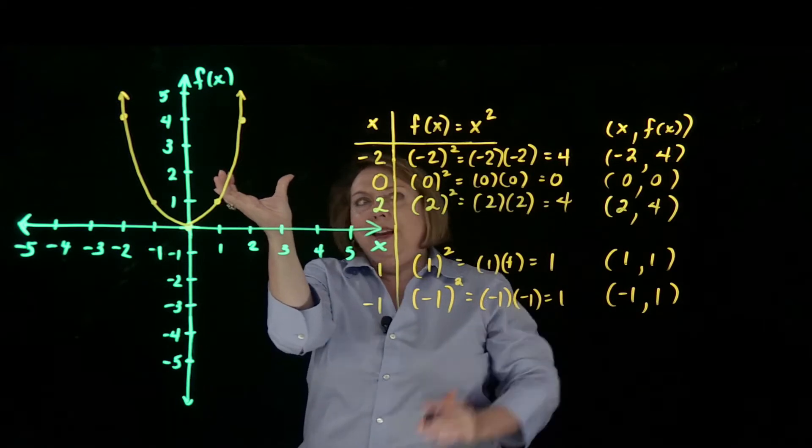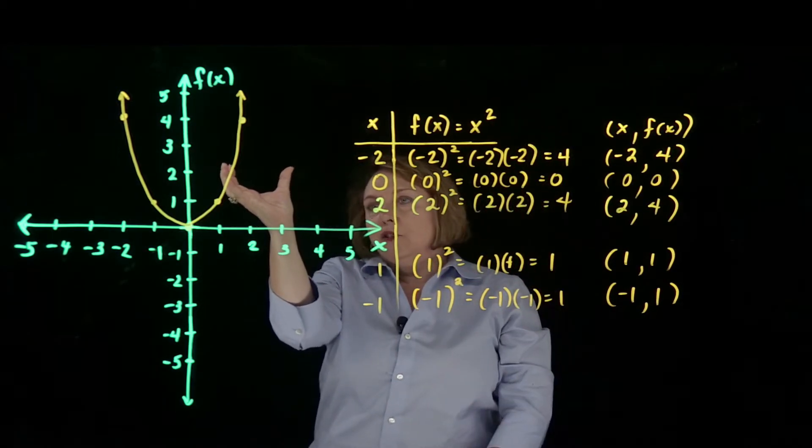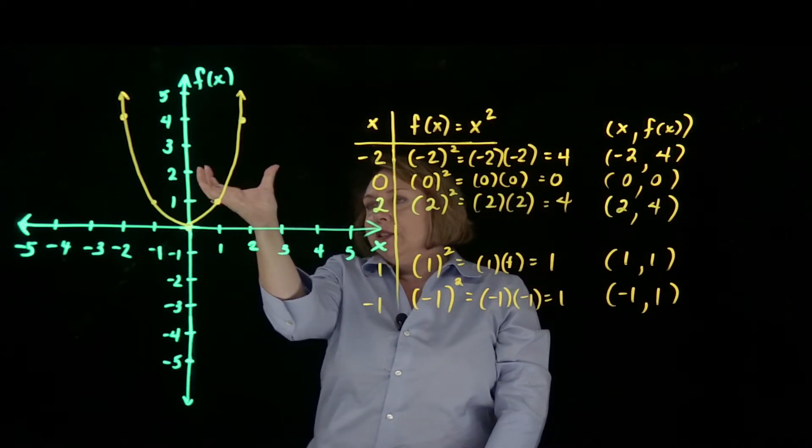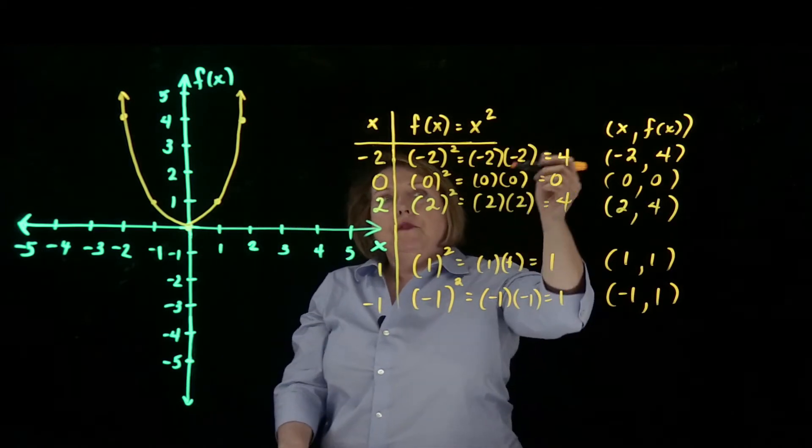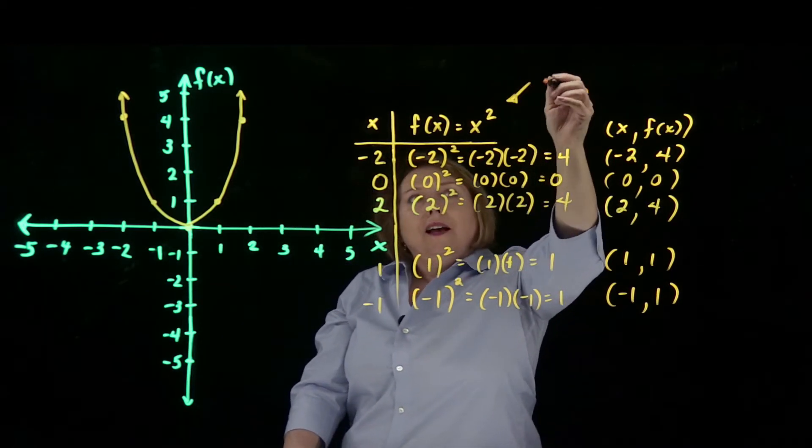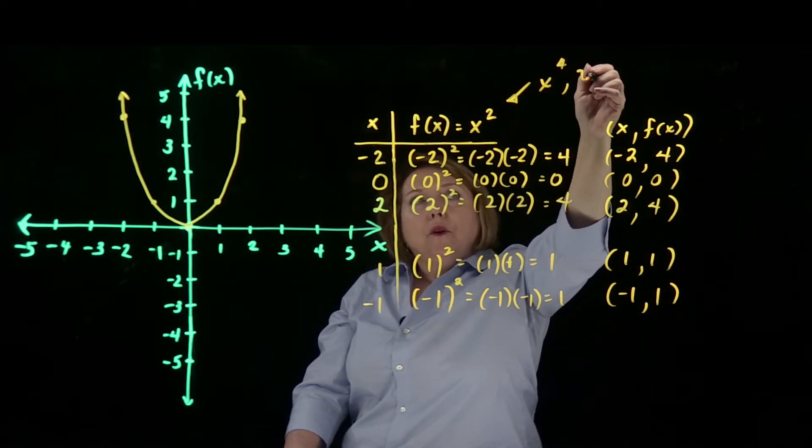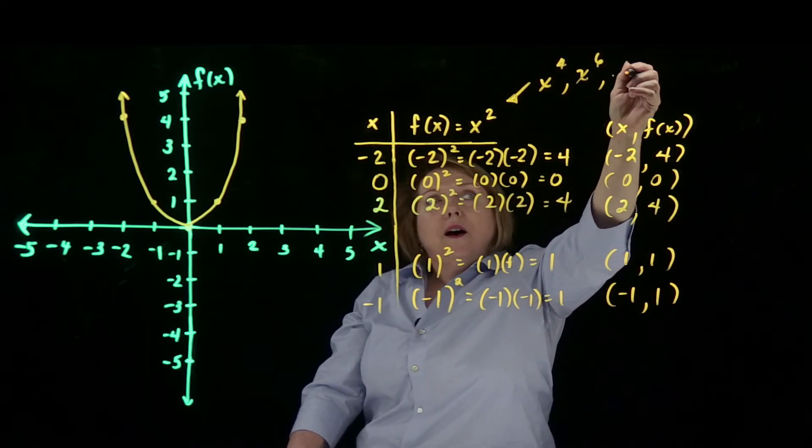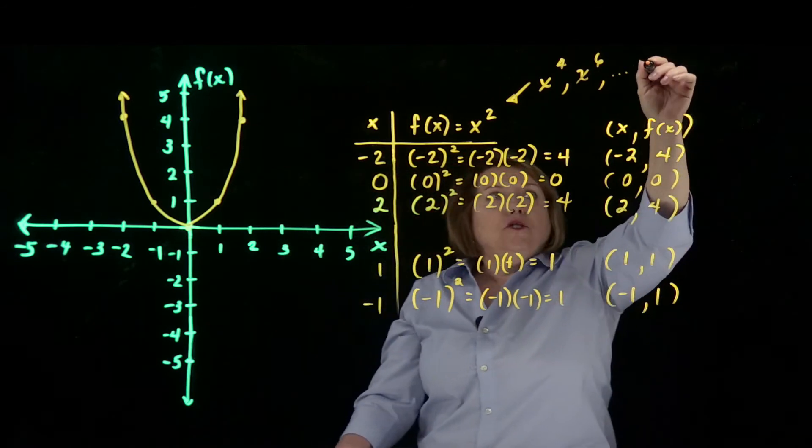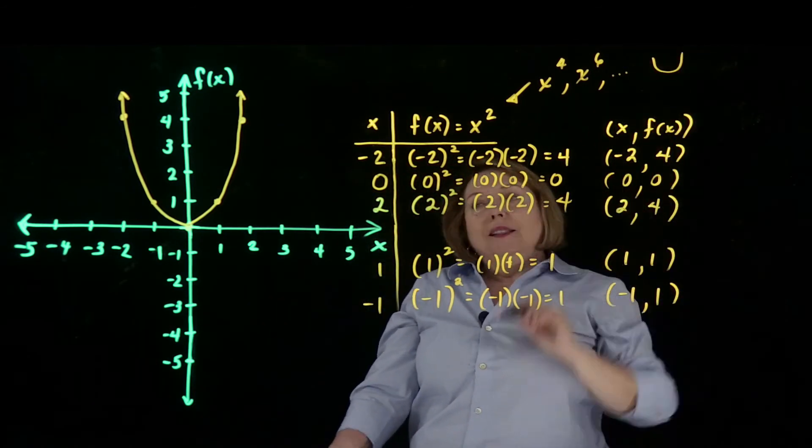So anything that has any function that has a square on it will have this form. Actually, any function that has an even exponent, x squared, x to the 4th, x to the 6th, and so on, will have a shape like a u shape.